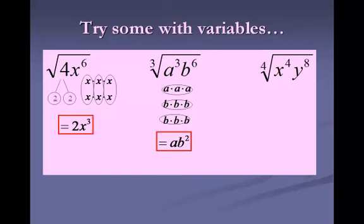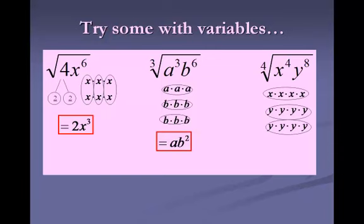On the next one, I draw out 4 x's and 8 y's putting them in groups of 4s. That's 1 group of x's and 2 groups of y's, so x to the 1st and y to the 2nd is the final answer.